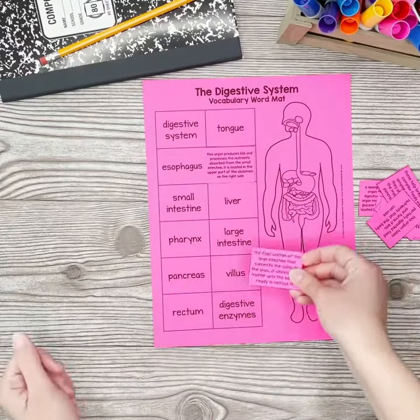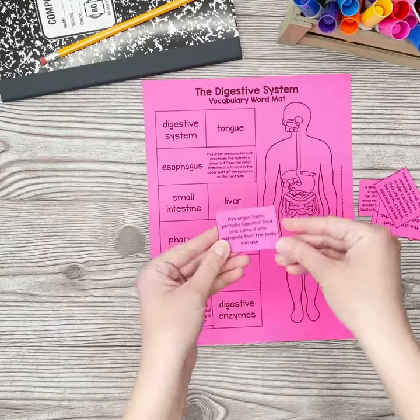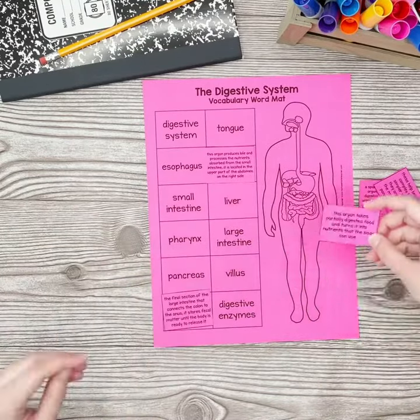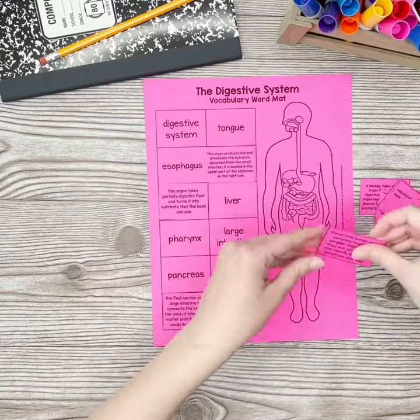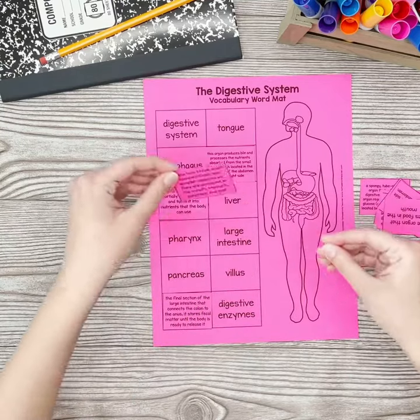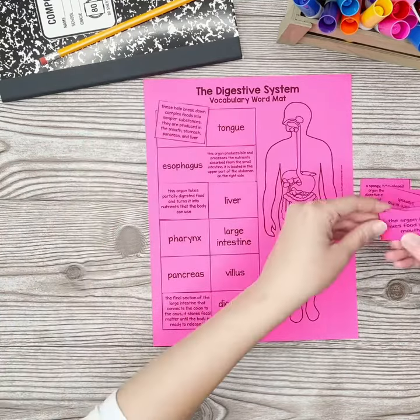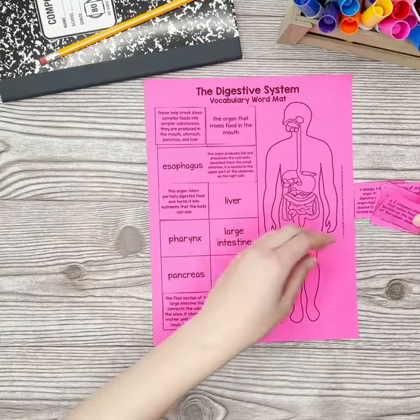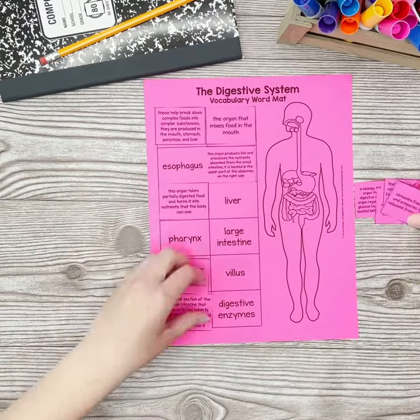Use vocabulary mats at the beginning of your science unit as an informal pre-assessment of students' content knowledge. Be sure to provide 10 to 15 minutes for vocabulary mats a few times a week to give students the opportunity to see their growth as they practice their words again and again.